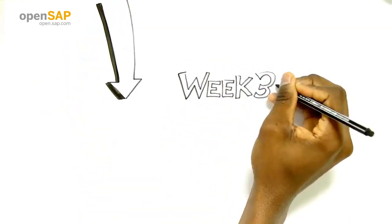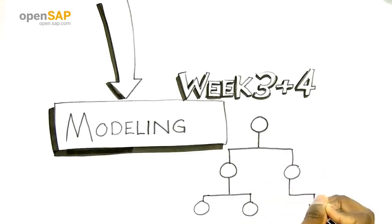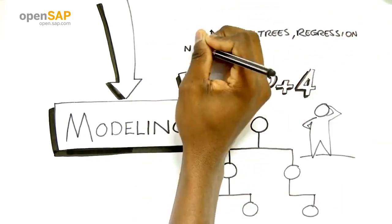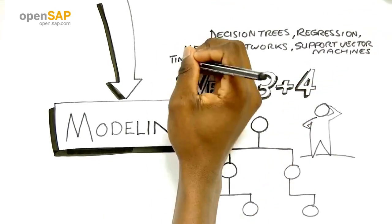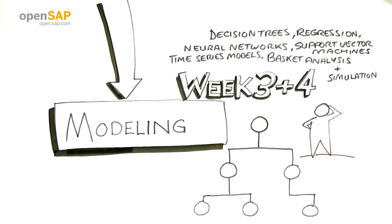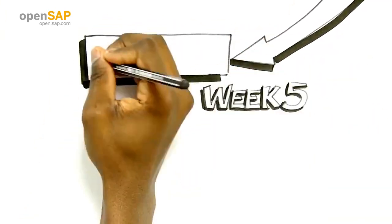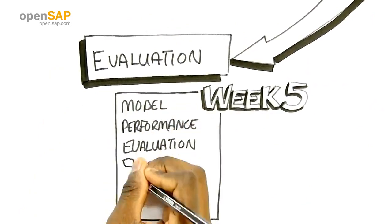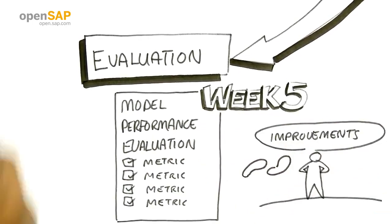Weeks three and four will introduce you to a wide range of algorithms such as decision trees, regression, neural networks, support vector machines, time series models, basket analysis and simulation. Week five explains how we evaluate the performance of our models, selecting the performance metrics and the approaches we take to improve models.